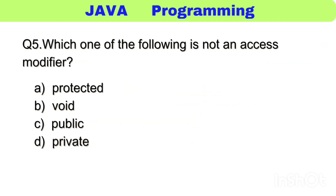Question number 5. Which one of the following is not an access modifier? The right answer, option B: void.